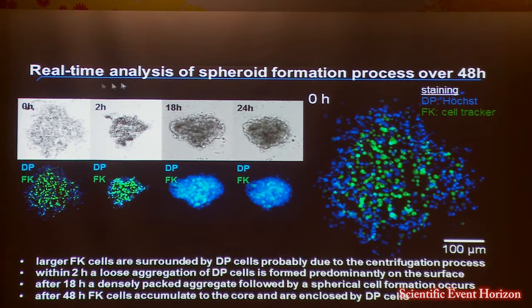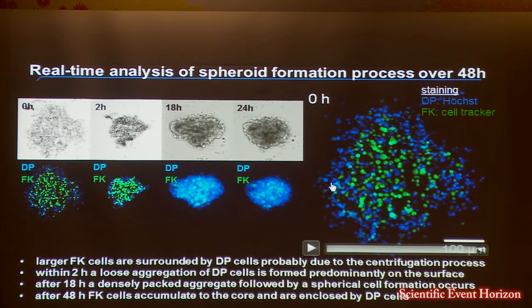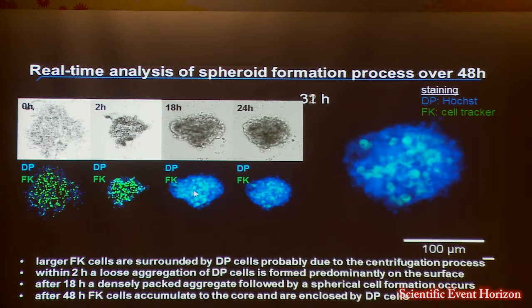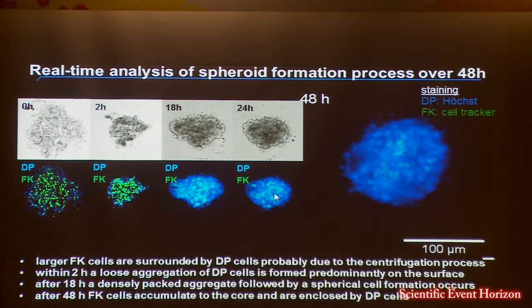We established a real-time analysis of spheroid formation using infrared microscopy. In this movie, at the beginning, the blue-colored dermal papilla cells are at the rim of the spheroid, whereas the green-colored keratinocytes are more or less in the middle. In time-lapse, you can see the formation process: after about 2 hours, a loose aggregate and a dense aggregate form, and after 24 hours, a spheroid is formed. We can suggest that in the middle are the green-colored keratinocytes surrounded by the blue-colored dermal papilla cells.